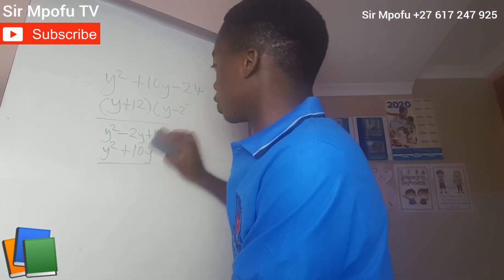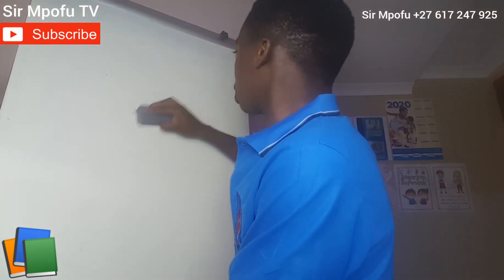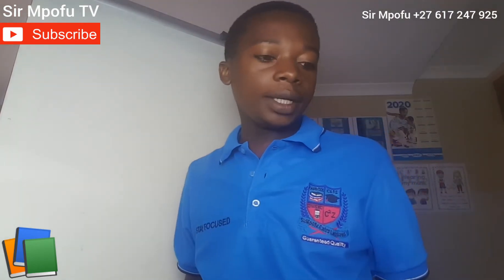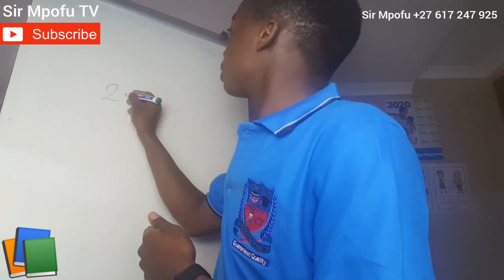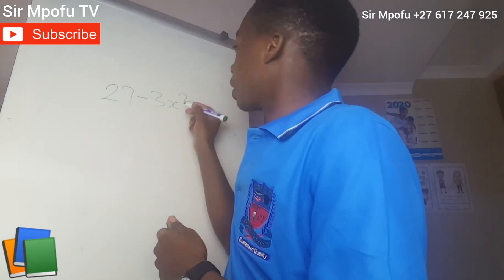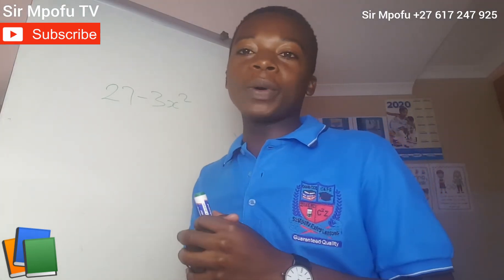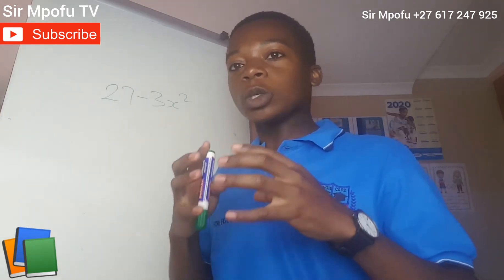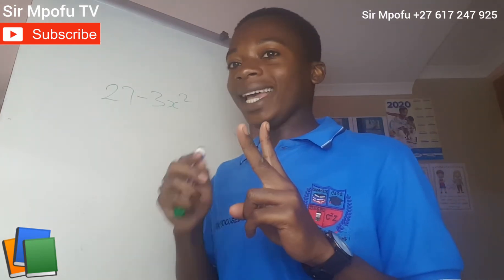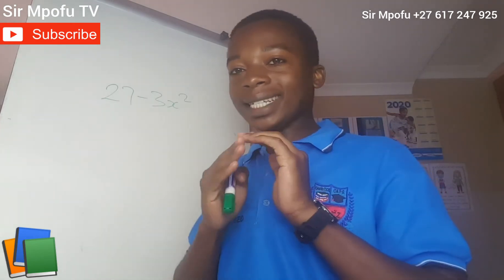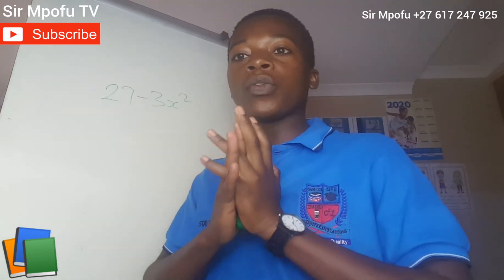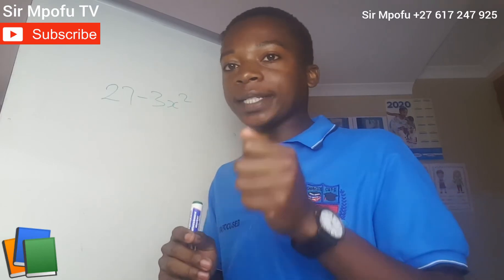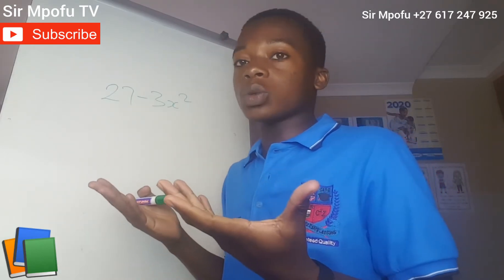Now let me choose the second question: 27 minus 3X squared. Factorize completely. I always tell all people studying mathematics that if you are asked to factorize completely and you have two terms with a negative in between, it must tell you it's difference of two squares. But in this case, we don't have perfect squares. You can only apply the concept of difference of two squares if you do have perfect squares. 27 and 3 are not perfect squares.